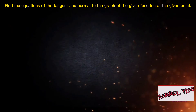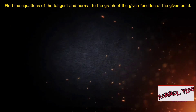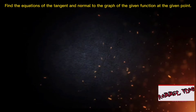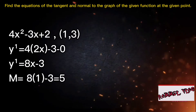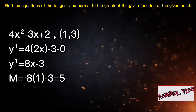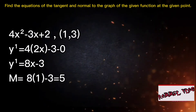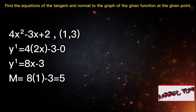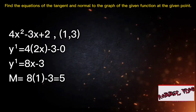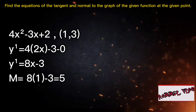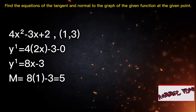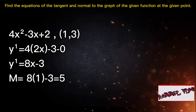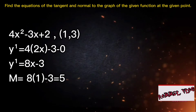Find the equations of the tangent and normal to the graph of the given function at the given point: 4x squared minus 3x plus 2, at the point (1, 3). First, we should derive the given function, which is 4x squared minus 3x plus 2.